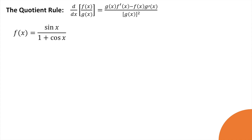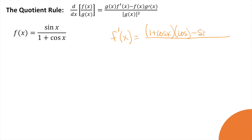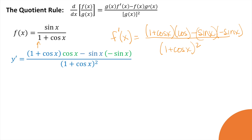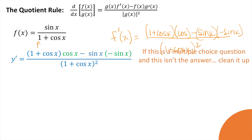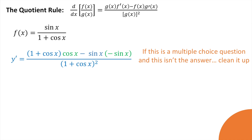Let's throw some trig functions in. f prime of x equals low — 1 plus cosine x — times d-high: the derivative of sine is cosine, minus high — that's sine of x — times d-low. The derivative of 1 is 0, and the derivative of cosine x is negative sine x, all over 1 plus cosine x squared. That's the derivative. However, if this is a multiple choice question and that's not the answer, let's clean it up. Sine times sine gives sine squared, and the two negatives make positive. Then we can distribute the cosine x through.